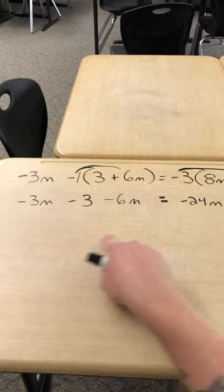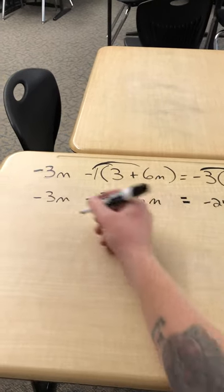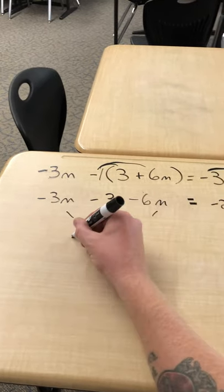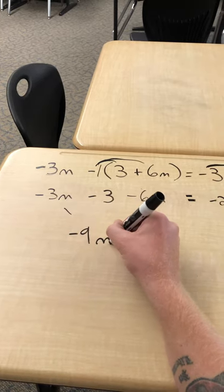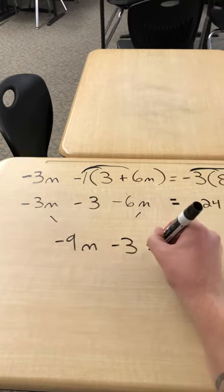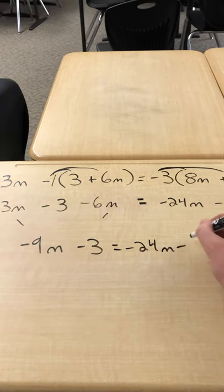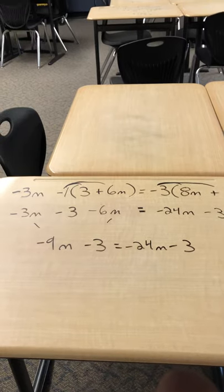All right, oh look, we have like terms on the left side right there. So negative 3 minus 6 is negative 9. So I'm going to combine those. So that's negative 9m. That negative 3 right there didn't change. Equals, okay, now I have my negative 24m from before minus 3.